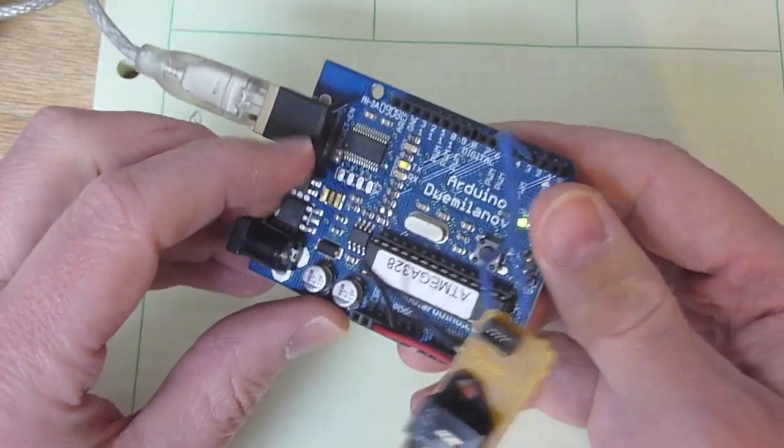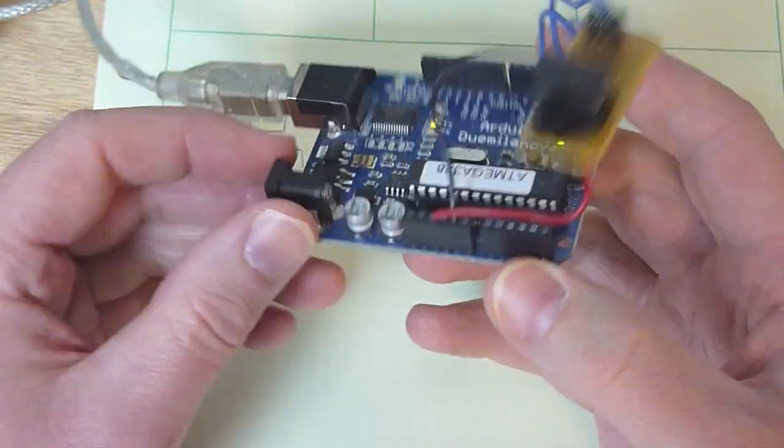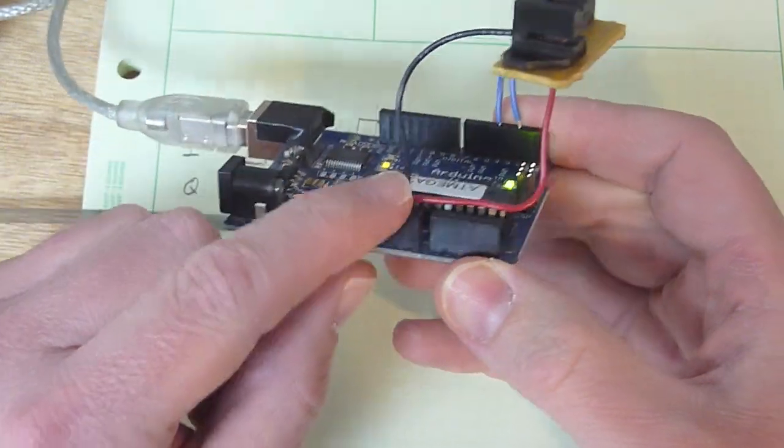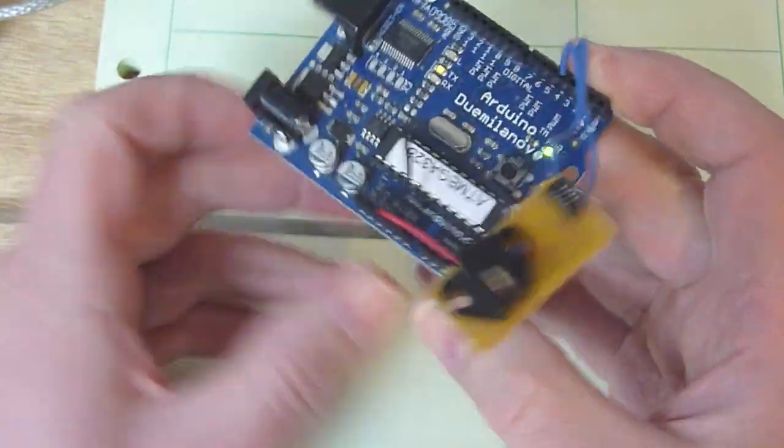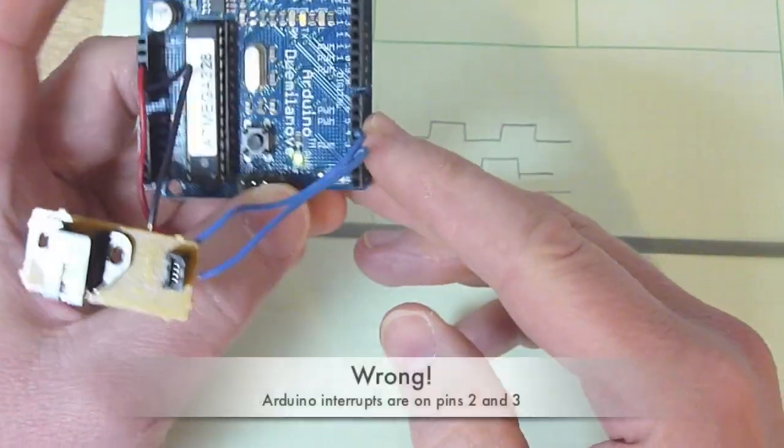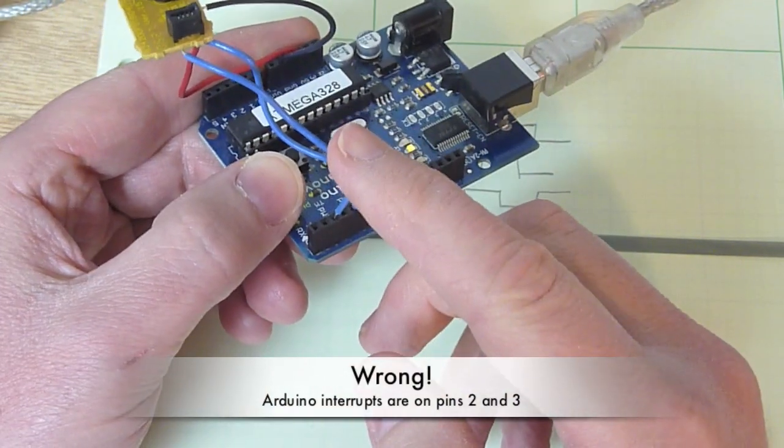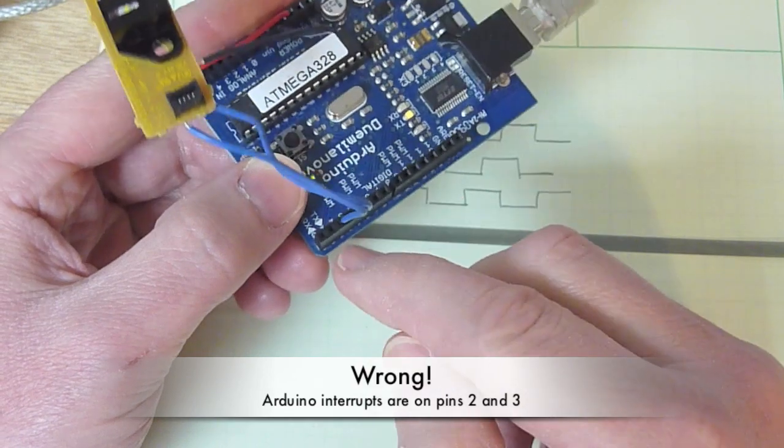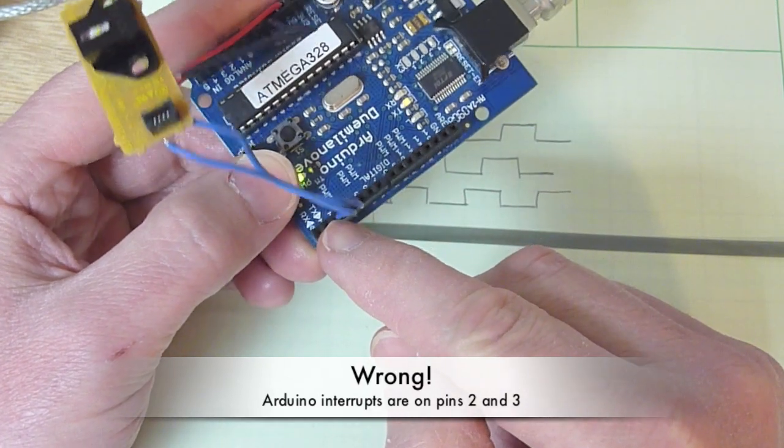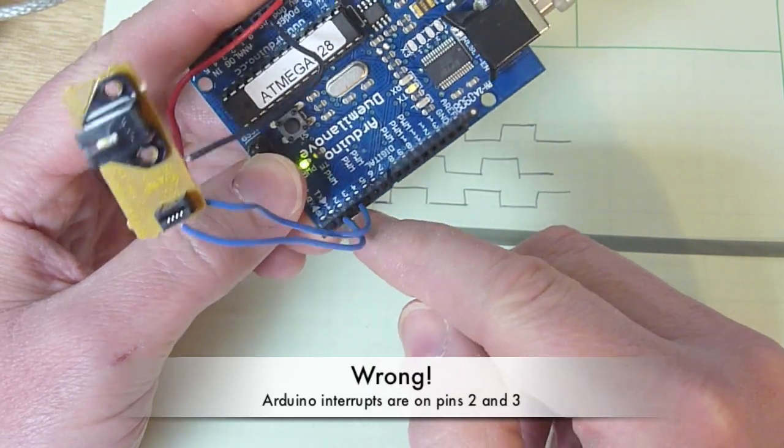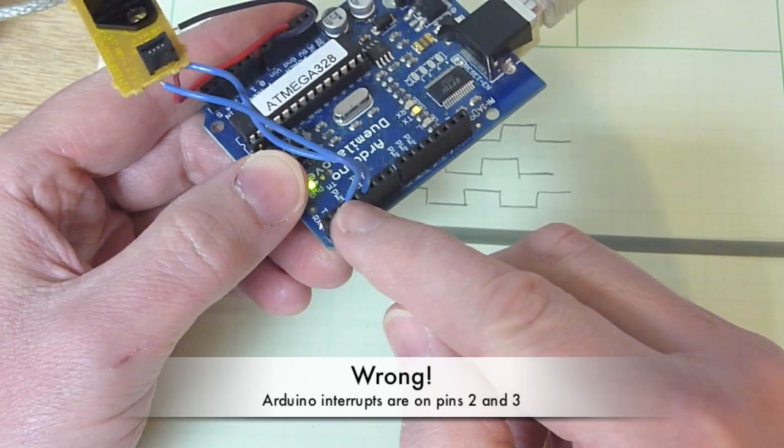So I've taken the photo interrupter out of the printer and I've hooked it up to the Arduino. So I've plugged into five volts and ground and the two interrupt pins are two and four. So what we'll call the I line is this wire here and it goes to pin two and pin four can have interrupts, but we're only going to use the interrupt on pin two.